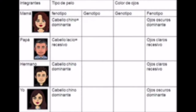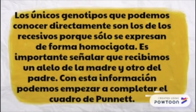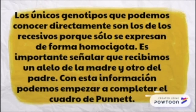En la quinta columna están las características fenotípicas de cada individuo respecto al color de ojos. Los únicos genotipos que podemos conocer directamente son los de las características recesivas, porque solo se expresan de forma homocigota. Es importante señalar que recibimos un alelo de la madre y otro del padre. Con esa información podemos empezar a completar el cuadro de Punnett.